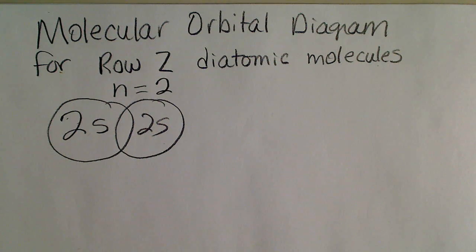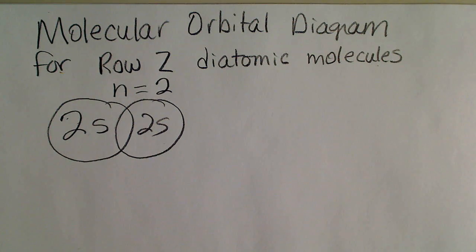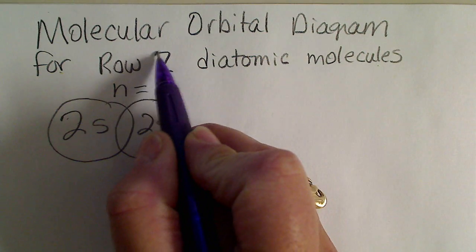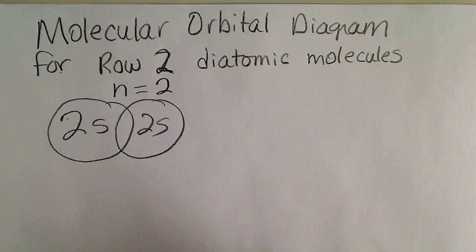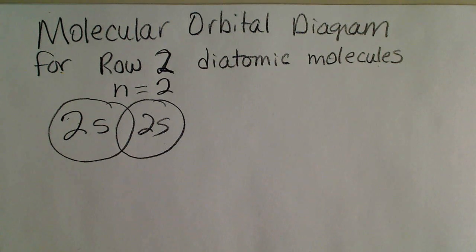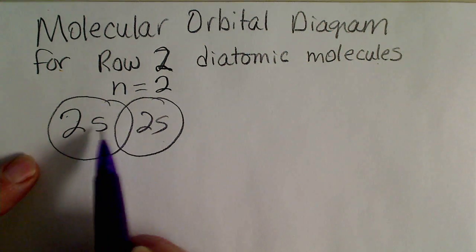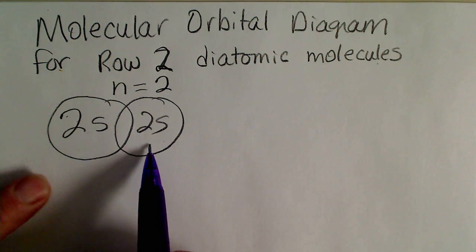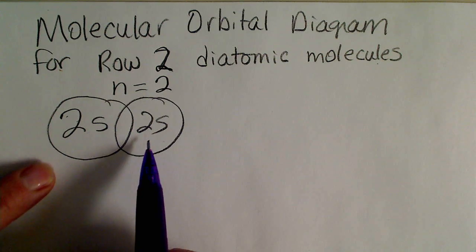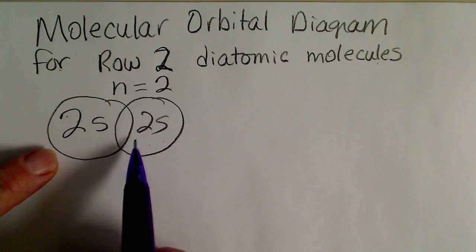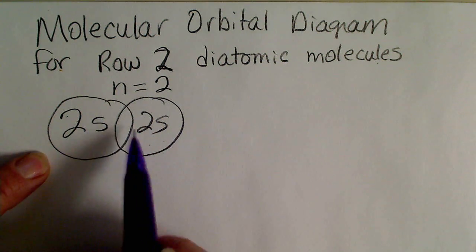In this video we're going to look at a molecular orbital diagram for diatomic molecules for the n equals 2 energy level of the periodic table. To label the MO diagram we're going to look at how two different atoms and their 2s orbitals can overlap.